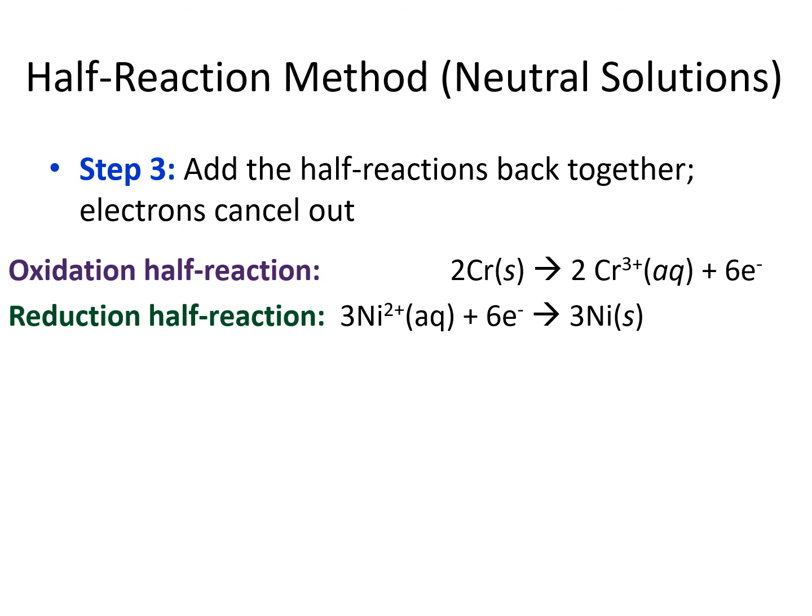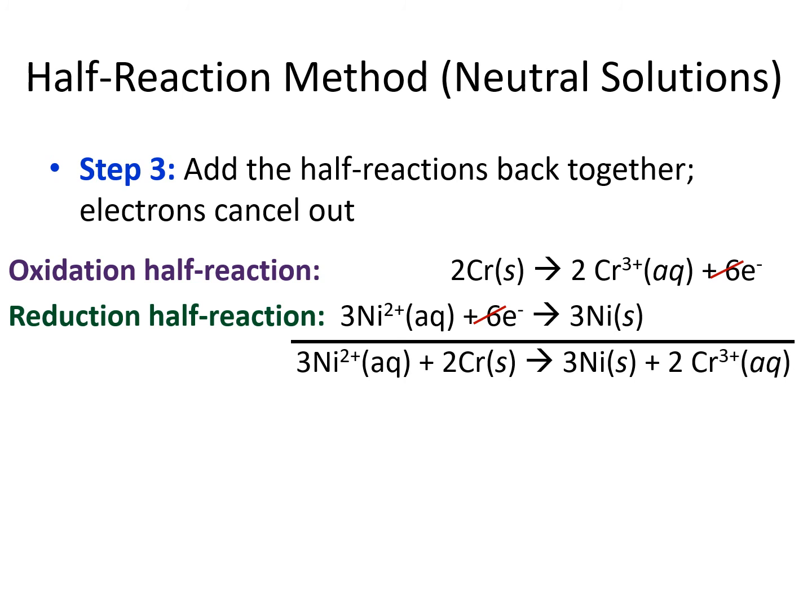Then we can add our half-reactions back together again, and the electrons will end up canceling out. Our 6 electrons get crossed off, and we just bring down everything else on the correct sides of the arrows. We have 3 nickel 2+ and 2 chromium solids on the left. On the right side, we have 2 chromium 3+ and 3 nickel solids. Now the equation is balanced in terms of both mass and charge.